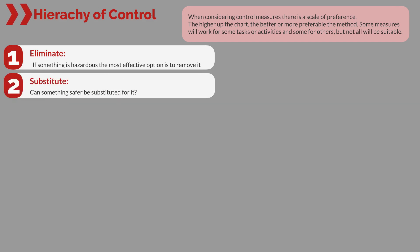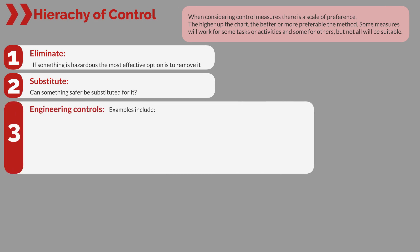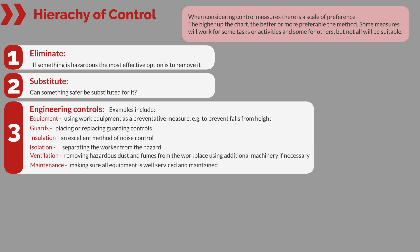Step two: substitute — can something safer be substituted for it? Step three: engineering controls. Examples include equipment, using work equipment as a preventative measure, for example to prevent falls from height; guards, placing or replacing guarding controls; insulation, an excellent method of noise control; isolation, separating the worker from the hazard; ventilation, removing hazardous dust and fumes from the workplace using additional machinery if necessary; and maintenance, making sure all equipment is well serviced and maintained.